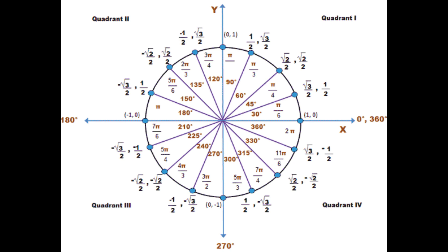In this figure, we are observing 4 quadrants: 1st, 2nd, 3rd, and 4th. The quadrantal angles are 0 degrees, 90 degrees, 180 degrees, 270 degrees, and 360 degrees.